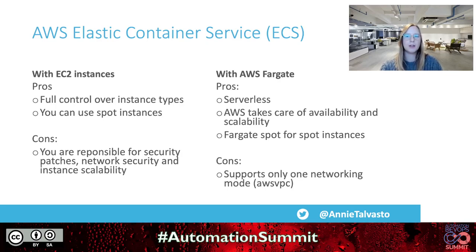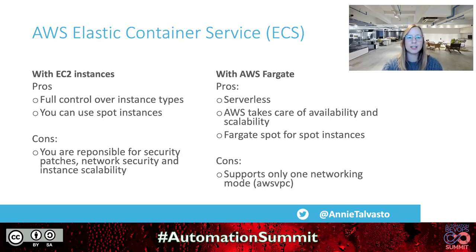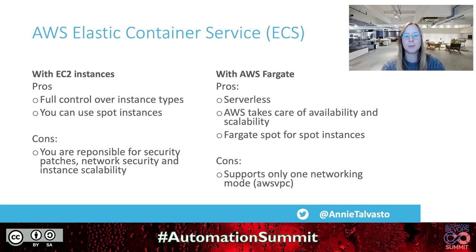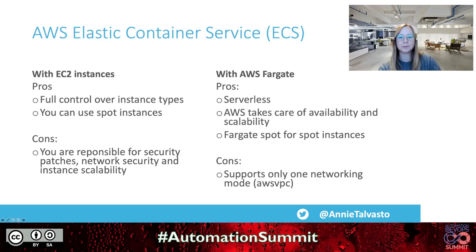With EC2 instances, the pros are full control over instance types and spot instance support; the cons are that you're responsible for security patches, network security, and instance scalability. With AWS Fargate, the pros are that it's serverless and AWS takes care of availability and scalability, with Fargate Spot for spot instances. The cons are it supports only one networking mode, which is AWS VPC.